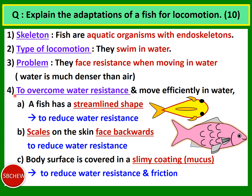The fish has three adaptations to overcome water resistance. The first is a streamlined shape to reduce water resistance. If you look at a fish from the top, its shape is like a drop of water — narrow at the front, broadens near the middle, then tapers and narrows to form a tip at the end.